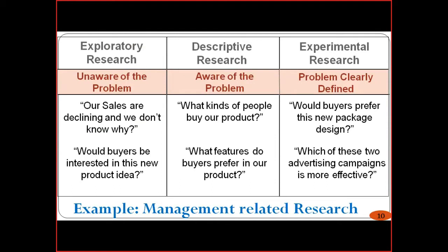In exploratory research, the researcher is unaware about the problem — they don't know what the actual problems are or what is happening. In descriptive research, the researcher is aware about the problem — they know there is a problem but don't know the exact details or why it occurs. In experimental research, the problem is clearly defined, and when the problem is clearly defined it is quite easy to proceed further because completing the research requires many resources.